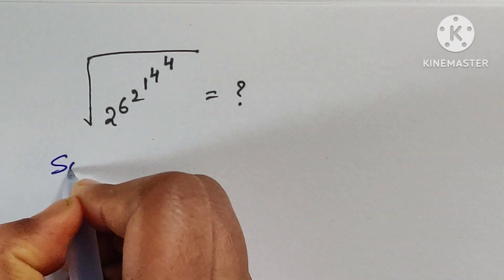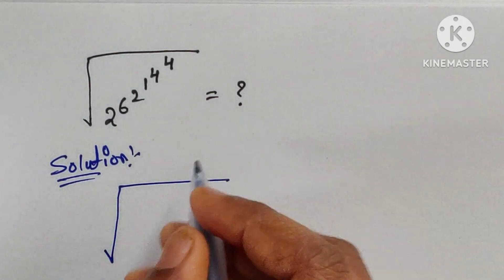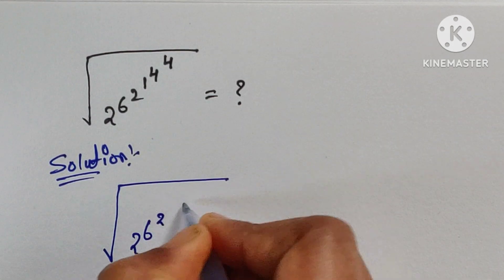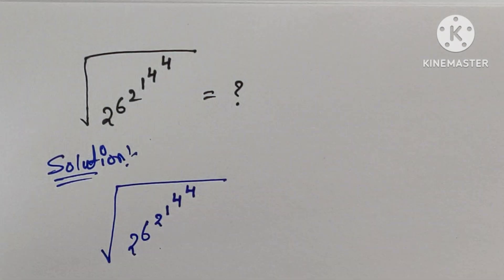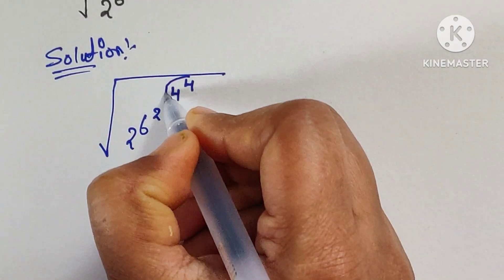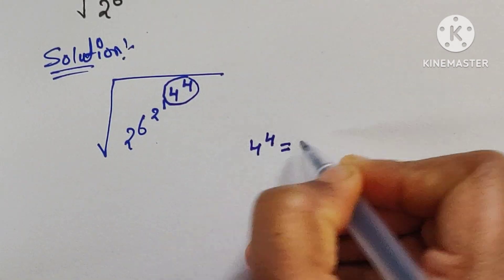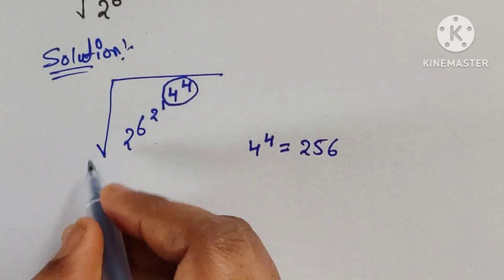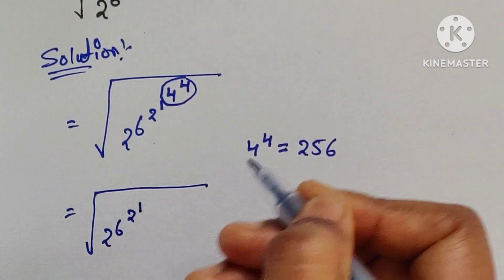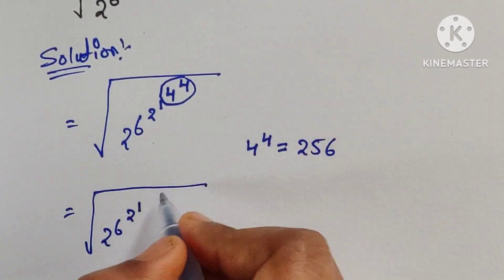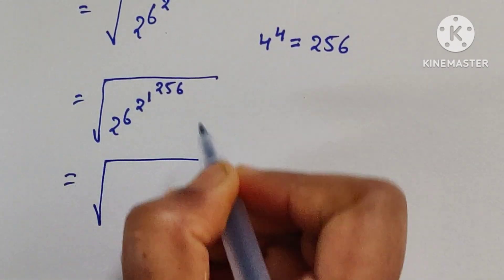So we have the square root of 2 to the power 6, times 6 to the power 2, times 1 to the power 4, times 4 to the power of 4. First, let's do this calculation: 4 to the power of 4, which equals 256.